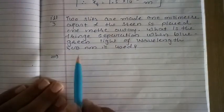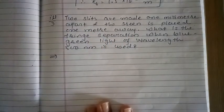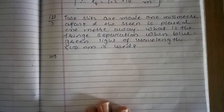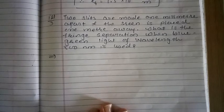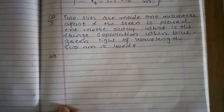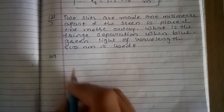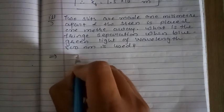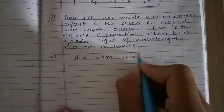Illustration No. 3. Two slits are made 1 mm apart and the screen is placed 1 meter away. Two slits are made 1 mm apart, so 1 mm is the distance between two slits, denoted by small d. So 1 mm equals 1 into 10 raise to minus 3 meter.